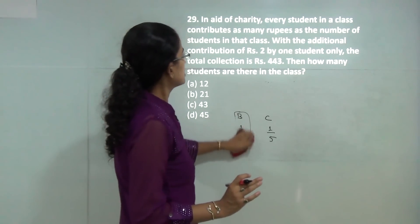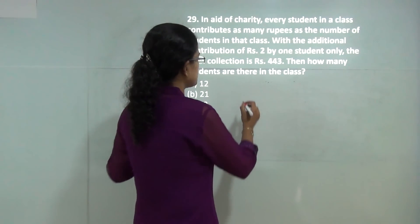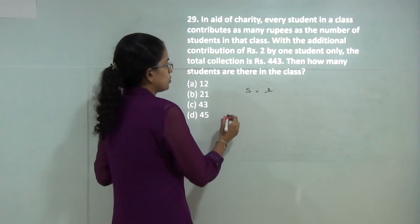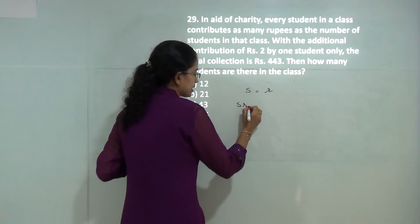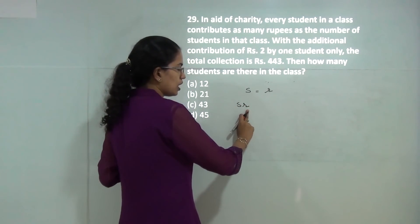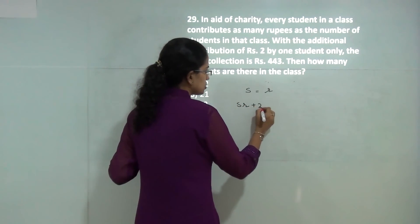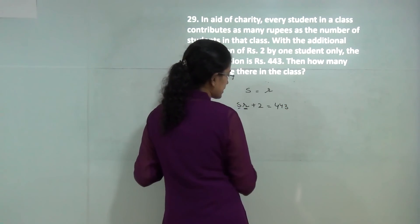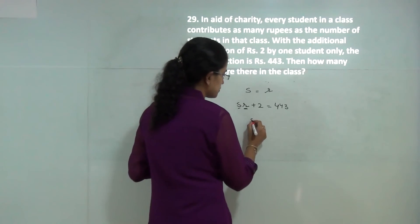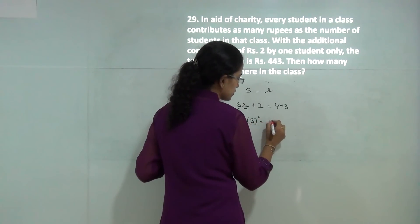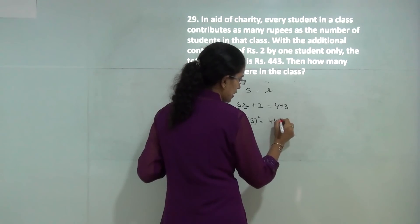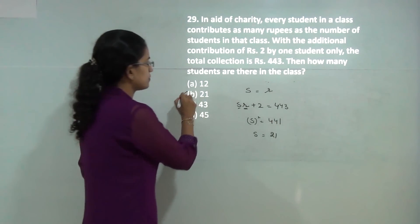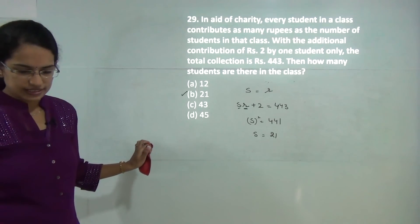In the next question, the number of students and the amount collected per student are equal. The total amount collected is number of students times amount per student plus 2, which equals 443. Since the amount per student equals the number of students, S squared equals 443 minus 2, which is 441. So S equals the square root of 441, which is 21. So 21 is the correct answer.